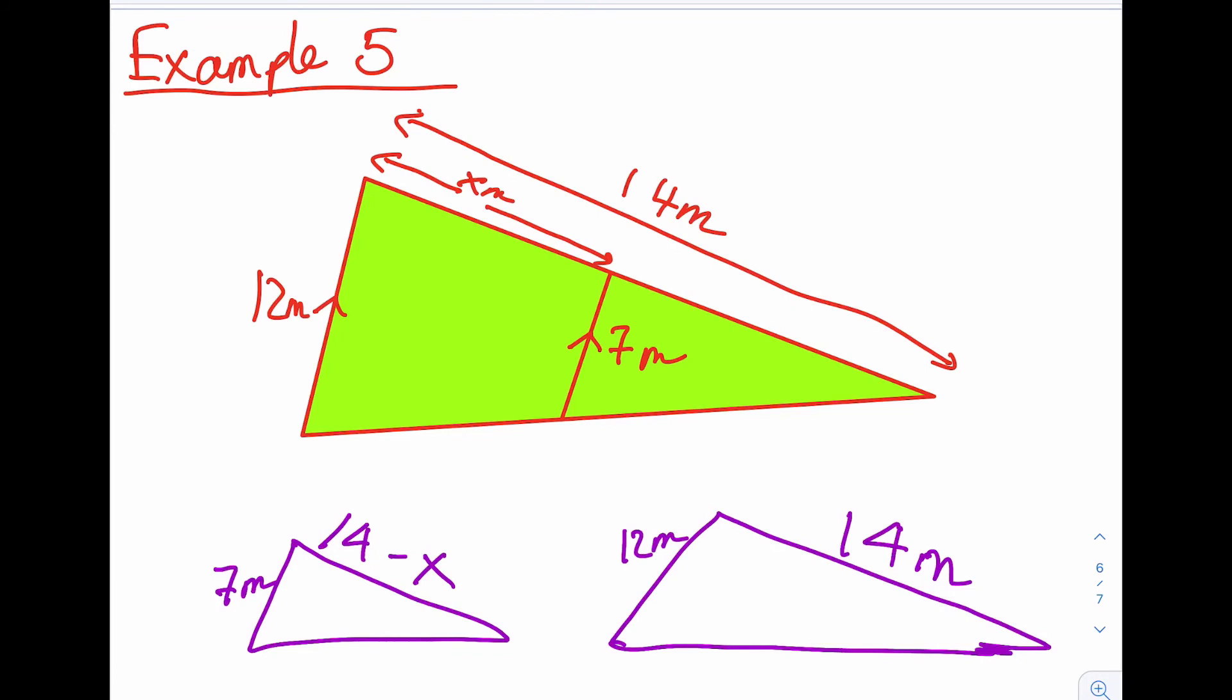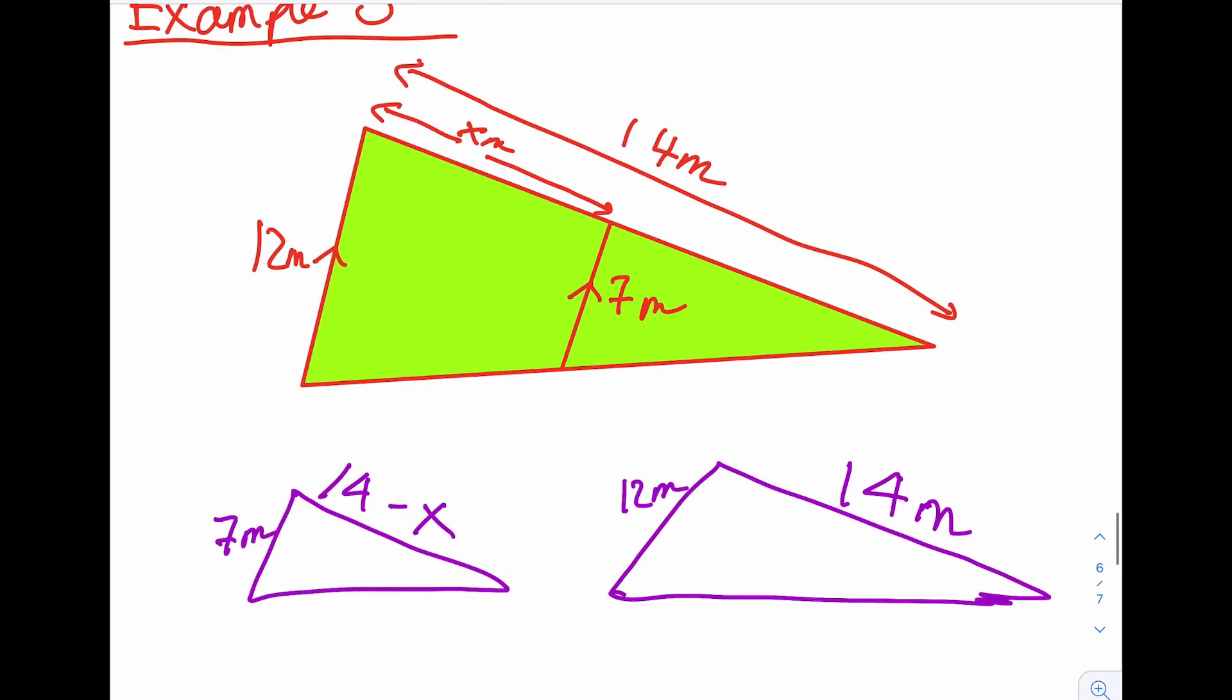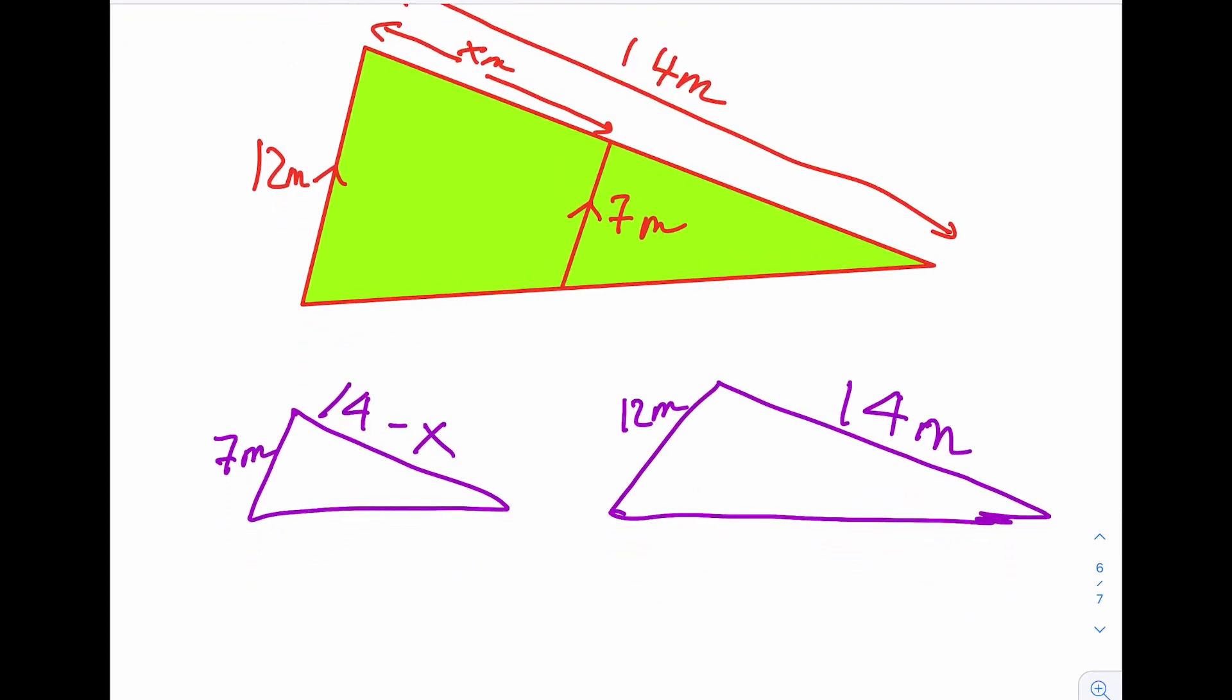So we start the same way. Don't be put off by this. As long as you could find that that was 14 minus X, you're good because this X is not part, not a full side of the small triangle. So we start off with a scale factor as normal. So looking at the bottom,